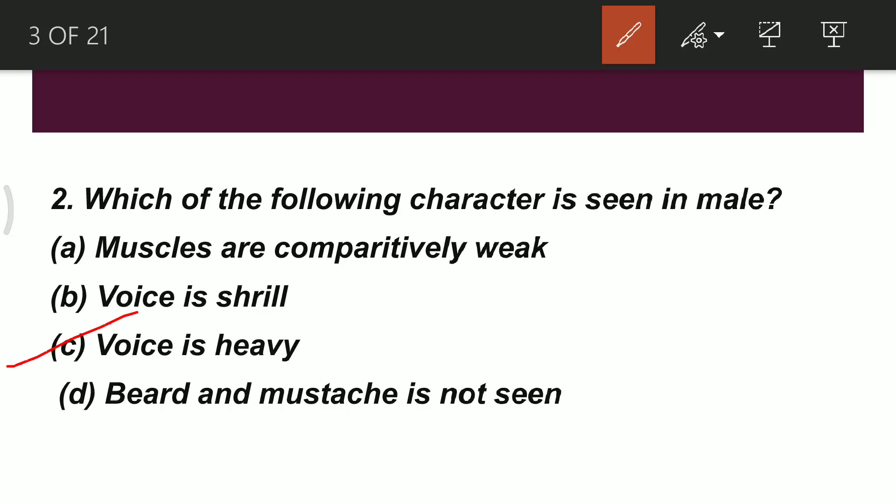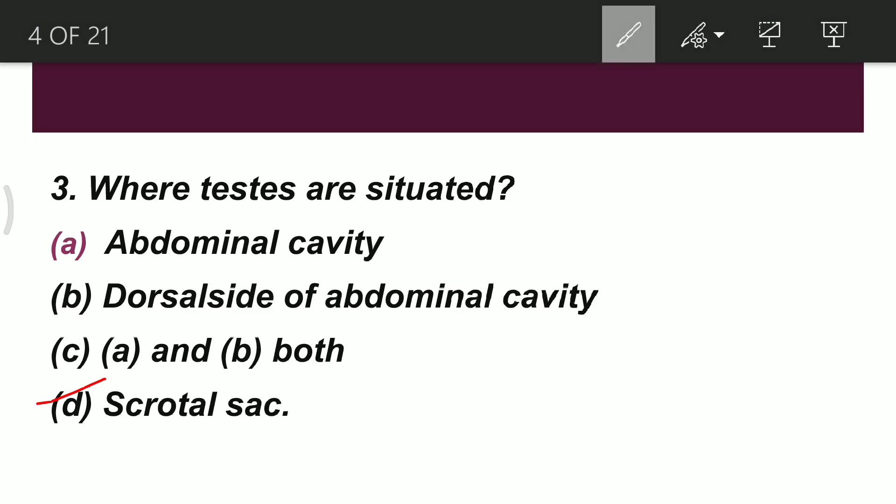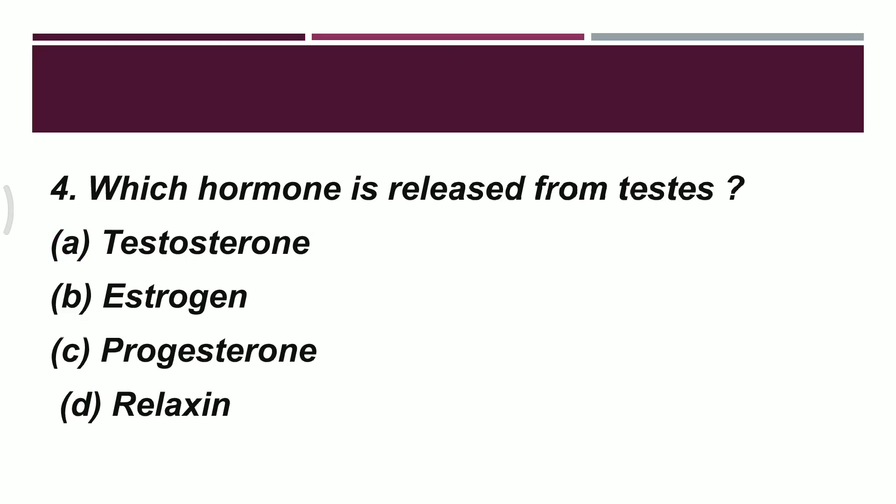The third question is: where are the testes situated? Option A: abdominal cavity. Option B: dorsal side of abdominal cavity. Option C: A and B both. Option D: scrotal sac. As discussed in the chapter, the correct answer is Option D — the testes are situated in the scrotal sac.